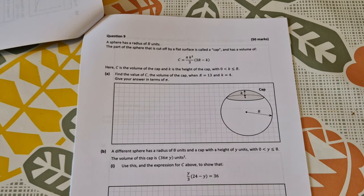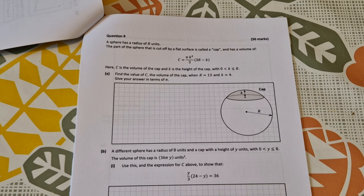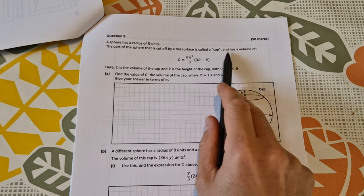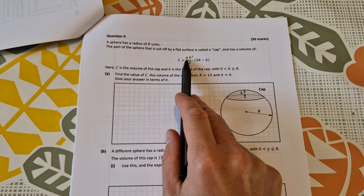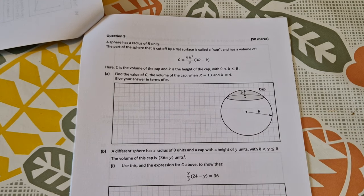Question 9. A sphere has radius of r units. The part of the sphere that is cut by a flat surface is called a cap. Here's the cap here. And we are given the volume of the cap, c is equal to pi k squared over 3 times 3r minus k. Here, c is the volume of the cap, k is the height of the cap, with k being between 0 and r. Find the value of c, the volume of the cap, when r is equal to 13 and k is equal to 4.